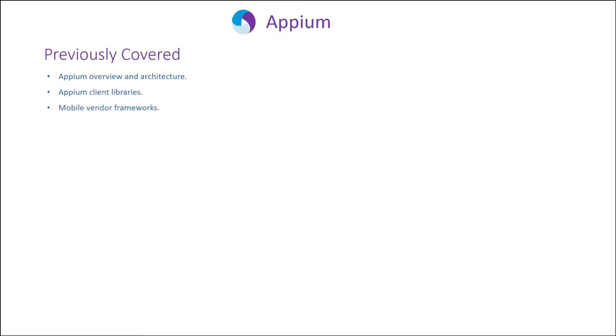These are the topics covered in our previous sessions. We covered Appium overview and architecture, Appium clients, a high-level overview of different mobile vendor frameworks, different types of mobile applications, what Android Studio is and how to install it, how to create a virtual Android device, how to install Appium server, and how to set up the environment for mobile test automation.